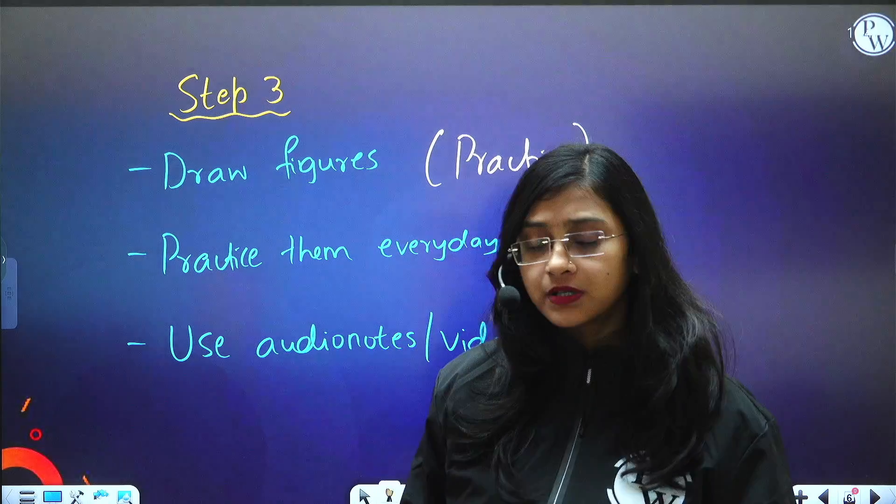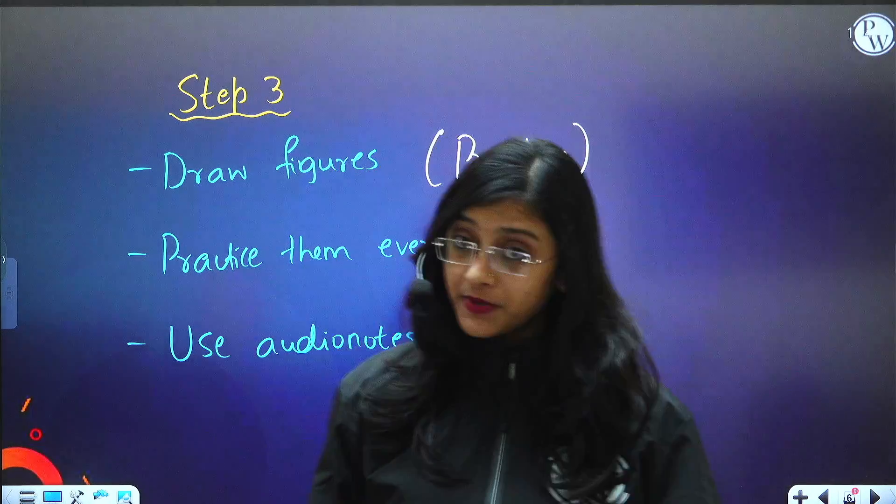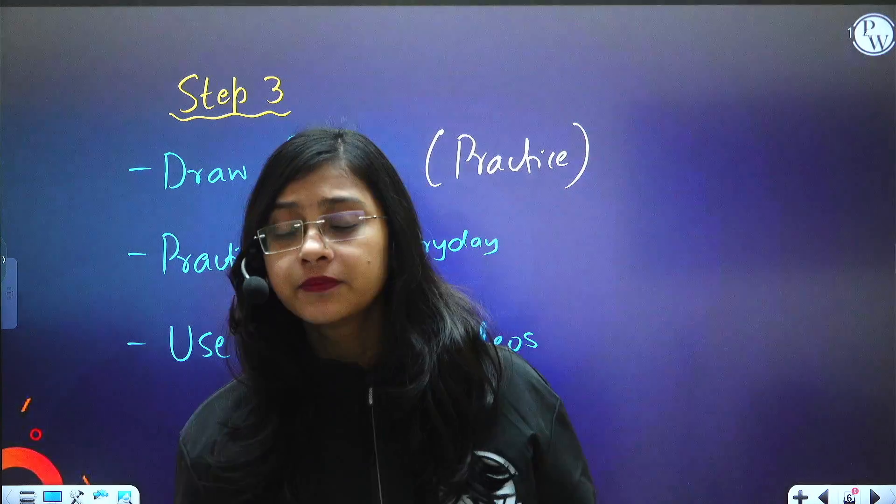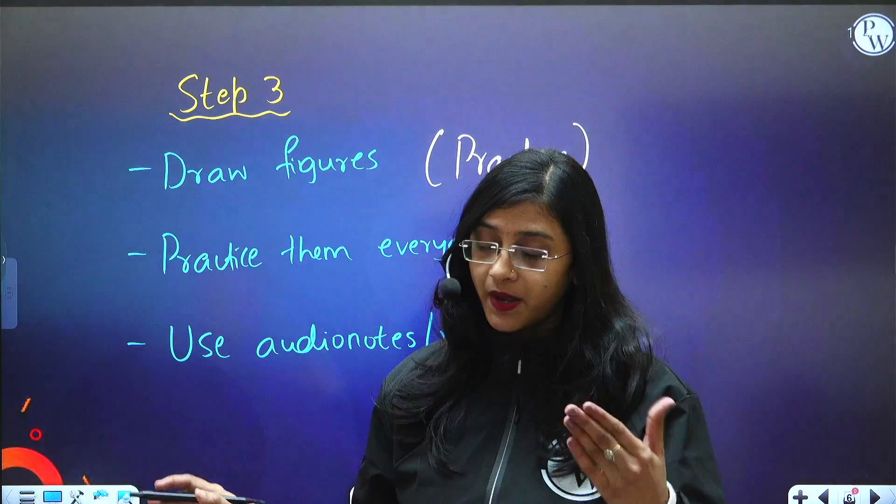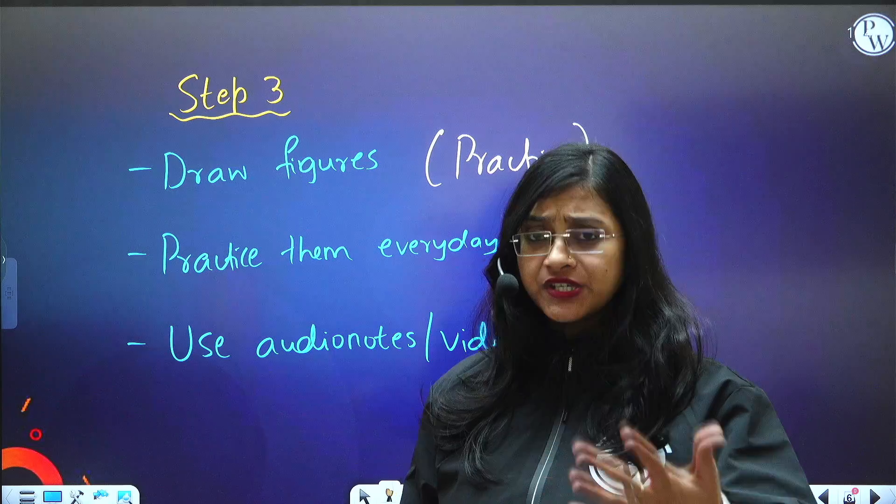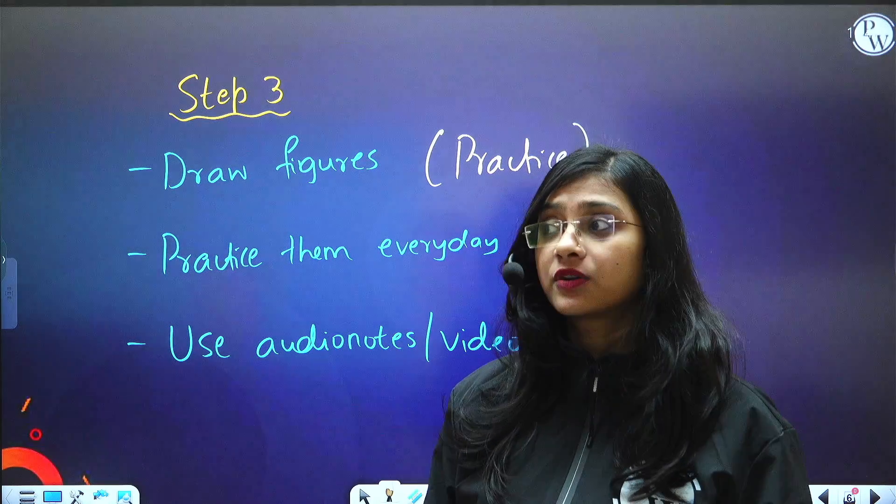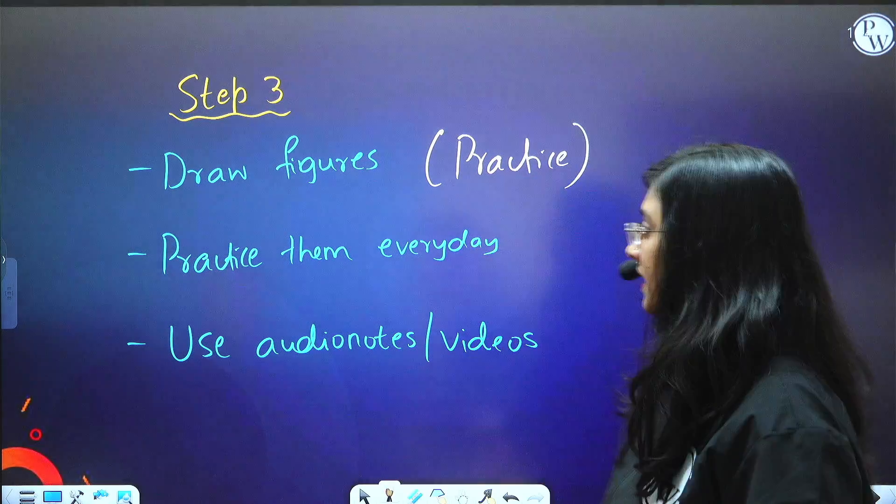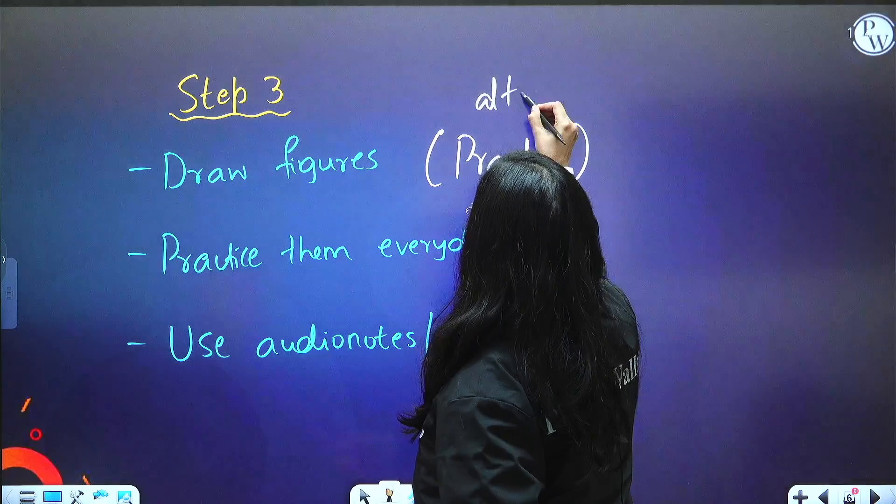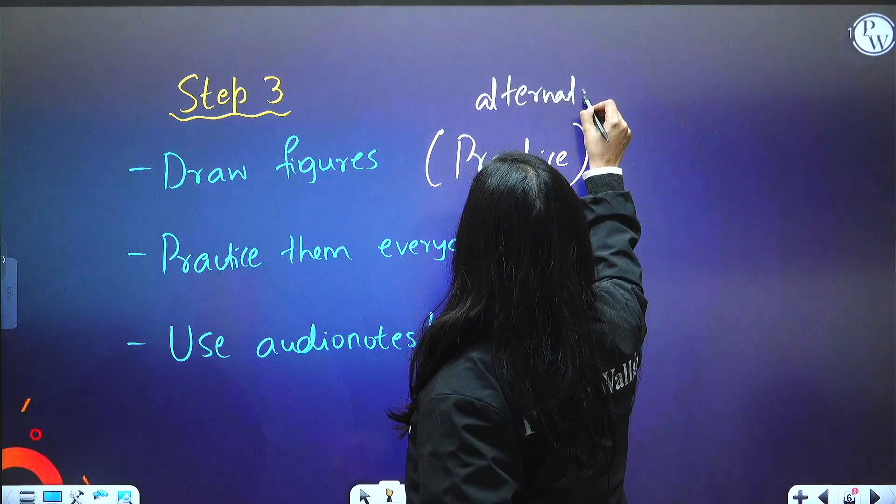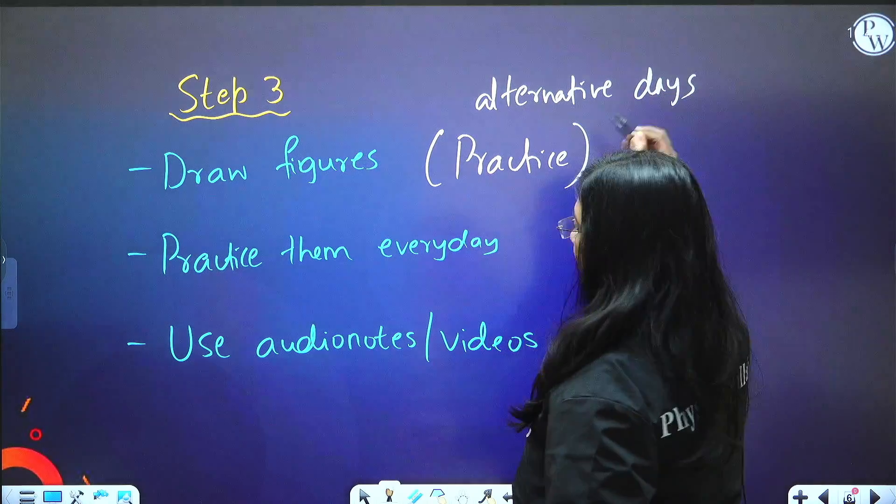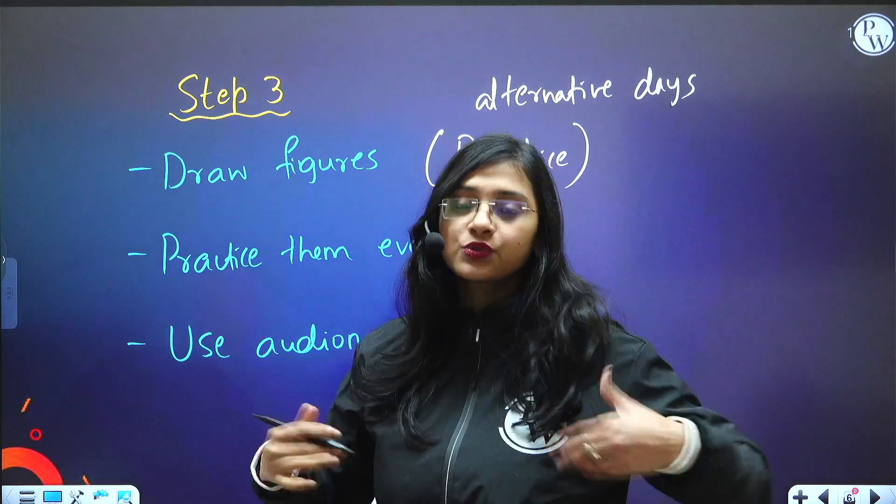Practice important figures that you have in your textbooks. In biology, in human reproduction chapter for example - male reproductive system, female reproductive system, mammary gland. Almost all the figures given in NCERT biology you have to practice because any question can be asked regarding that, or they can ask you to draw those diagrams. Practice at least on alternative days - once in two days at least keep practicing the diagrams.